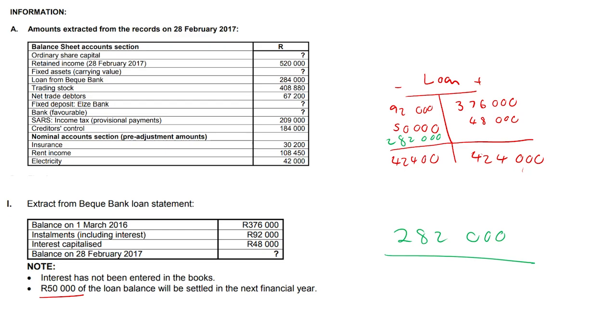And the interest capitalized — in other words, our interest expense — that's 48,000. That's going to go straight into our income statement under the interest expense, one of the last few line items. And that's it.